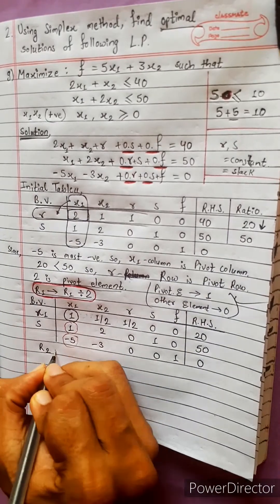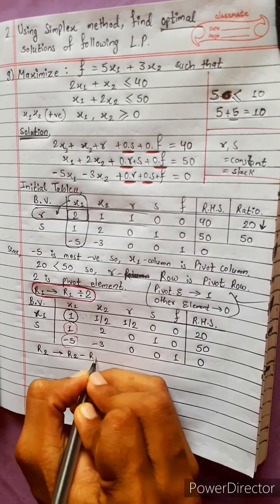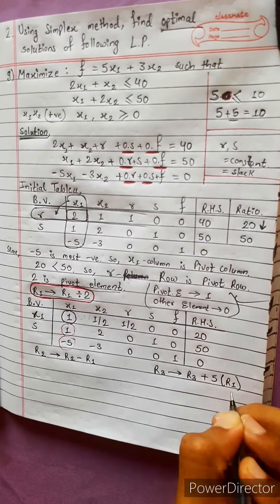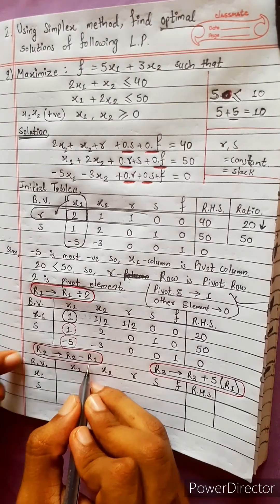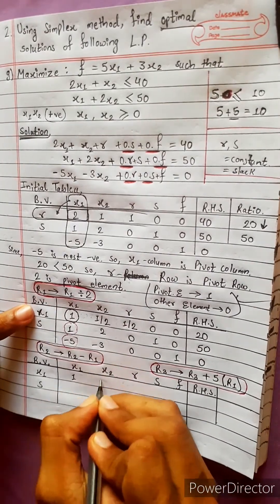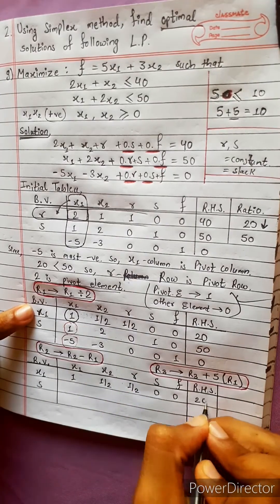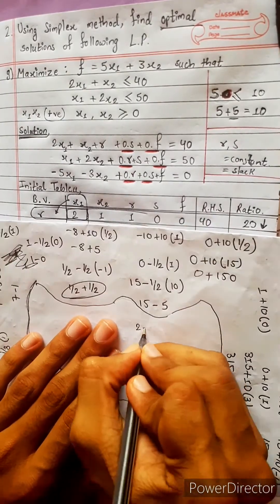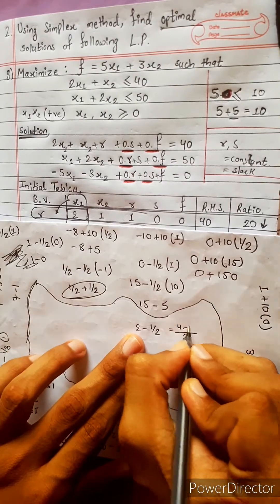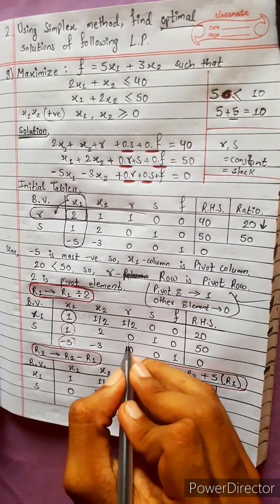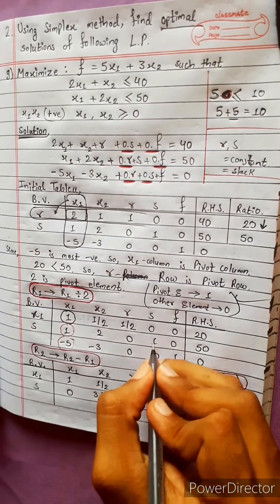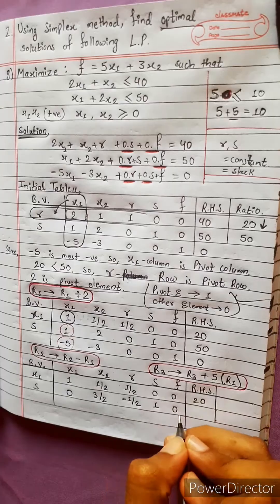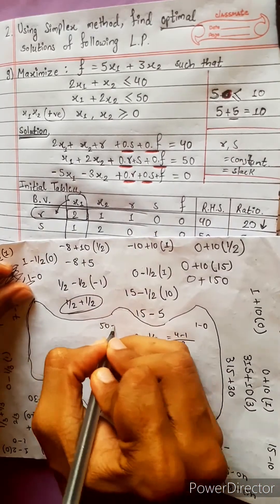R2 changes into R2 minus R1. R1 remains the same. R2 minus R1: 1 minus 1 equals 0; 2 minus 1 by 2 equals 3 by 2; 0 minus 0 equals 0; 1 minus 1 by 2 equals 1 by 2; 0 minus 0 equals 0; 50 minus 20 equals 30.